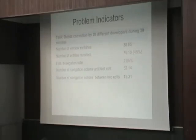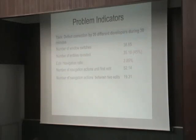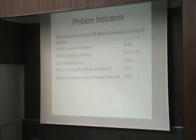We also recorded the navigation ratio. This ratio means: how many navigation actions do I have to perform until I finally find the method that I want to modify? The percentage was below 3%, which means that on average developers had to navigate around 50 entities until they find an entity they can actually modify. It's really hard to find the right place in source code.